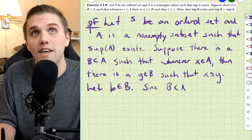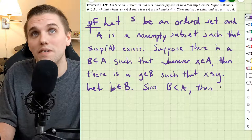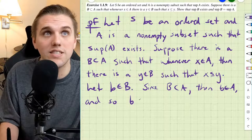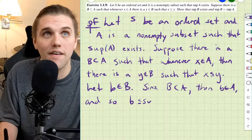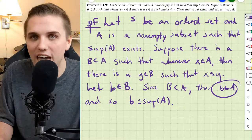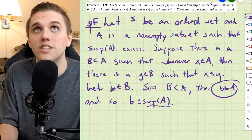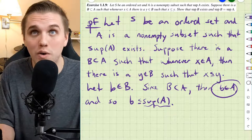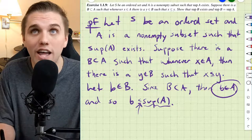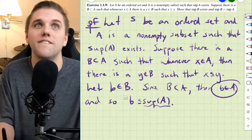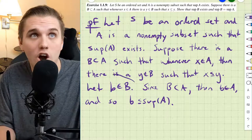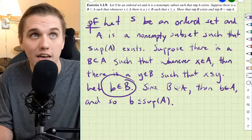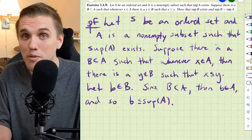Since B is a subset of A, then that element of B is actually in A as well. And so it is less than or equal to the supremum of A. Why is that? Well, the supremum of A already exists, and by definition it is an upper bound of A, so it's greater than or equal to every element in A, including that element. So we just showed that for any arbitrary element in B, it is going to be less than or equal to the supremum of A — meaning the supremum of A is an upper bound of B.